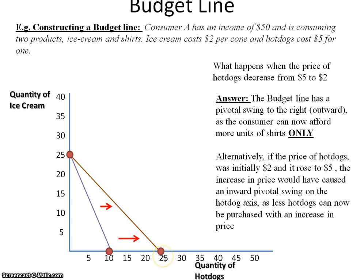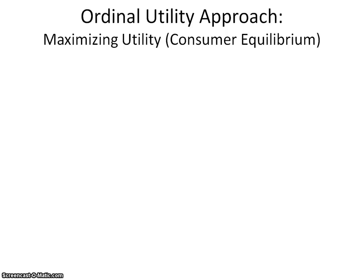Inversely, if the price of hot dogs rose from $2 to $5, the affordable quantity would fall from 25 units to 10 units, resulting in an inward pivotal swing. To summarize: a change in consumer income produces a parallel shift in the budget line — rightward if income increases, leftward if it decreases. A change in the price of a product produces a pivotal swing — outward if the price decreases, inward if the price increases.